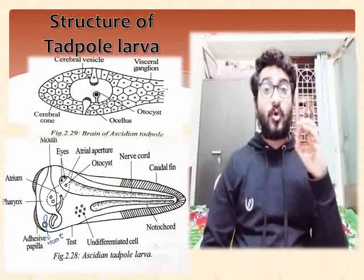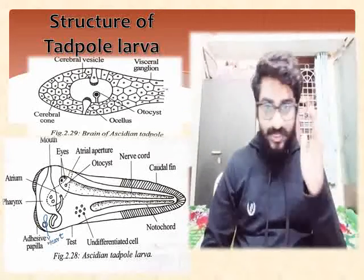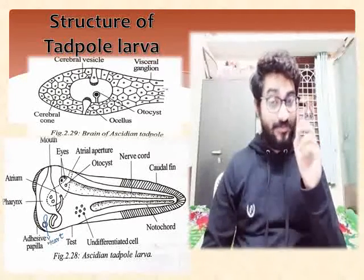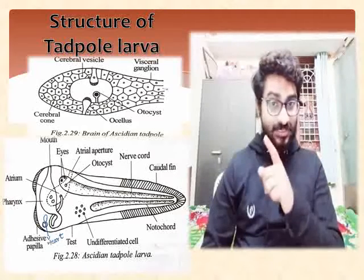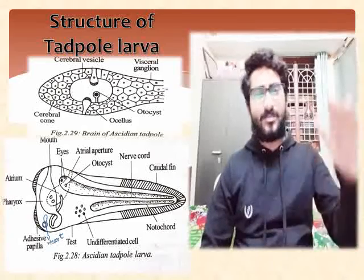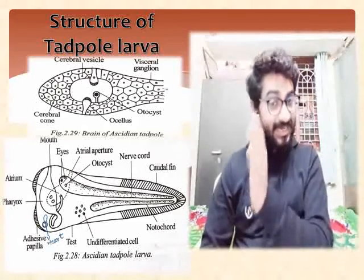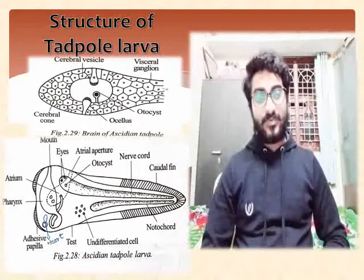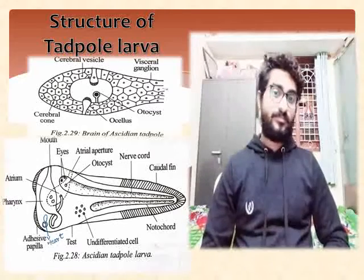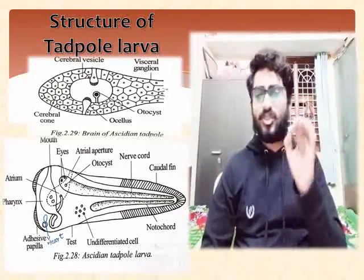The ascidian tadpole larvae is planktonic. Planktonic here means these tadpole larvae — whenever I am using the term tadpole larvae in this topic, I am specifically using it with respect to the ascidian tadpole larvae. But that does not mean it is a frog's larvae. The ascidian tadpole larvae is planktonic in food — it eats phytoplanktons and smaller zooplanktons.